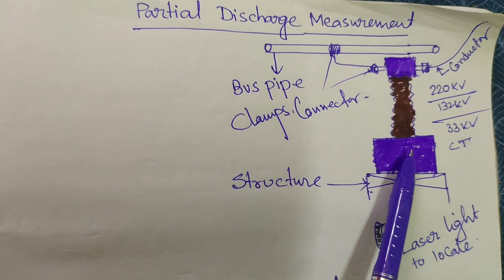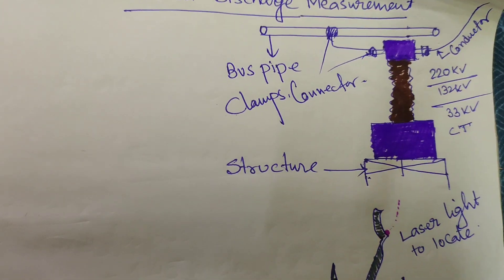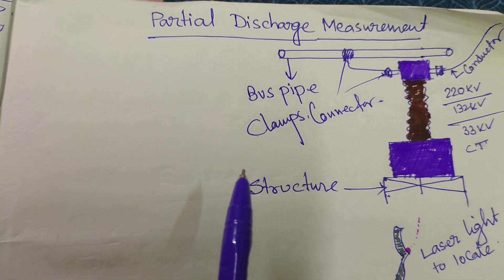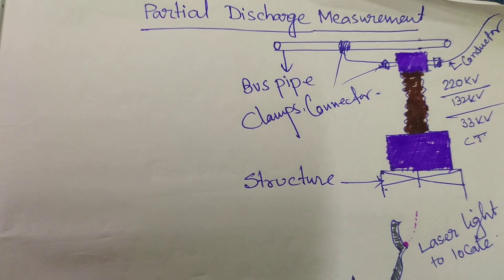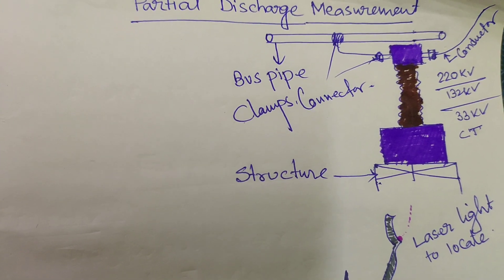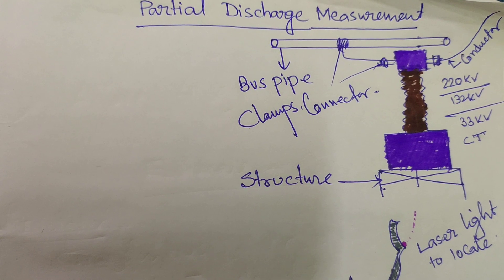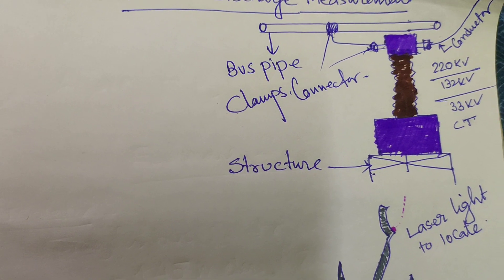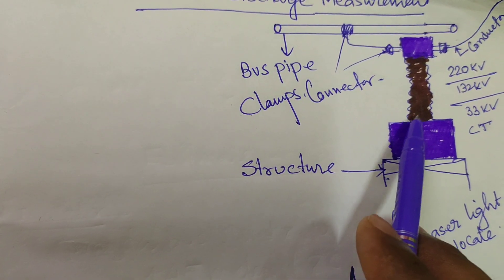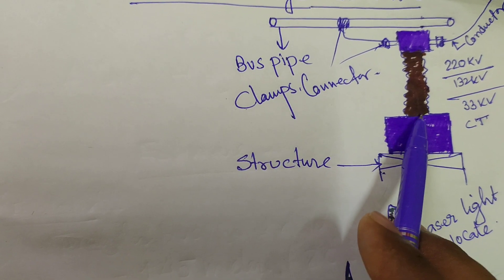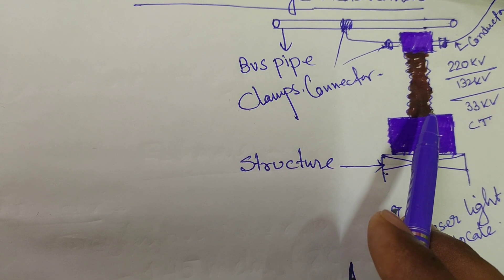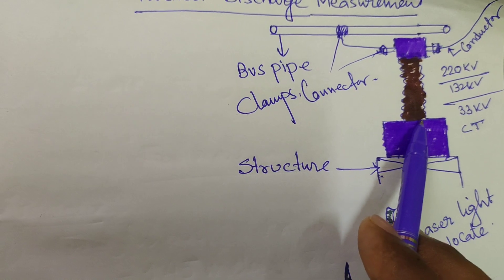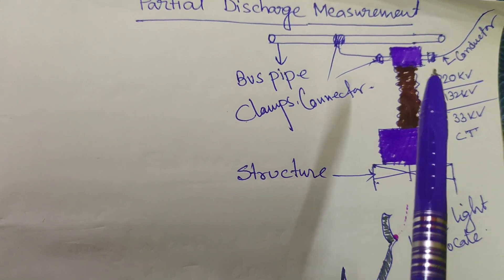It may be the 220 kV, 132 kV, 33 kV, or 400 kV current transformer. Partial discharge measurement is an important test that should be conducted in every power plant and substation to ensure that any discharging current or insulation failure occurring in the insulators can be identified and maintained properly to increase the life of the equipment.